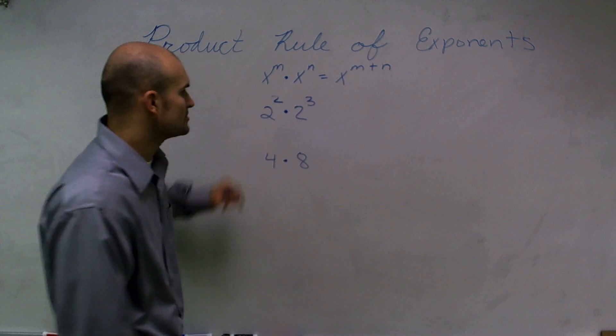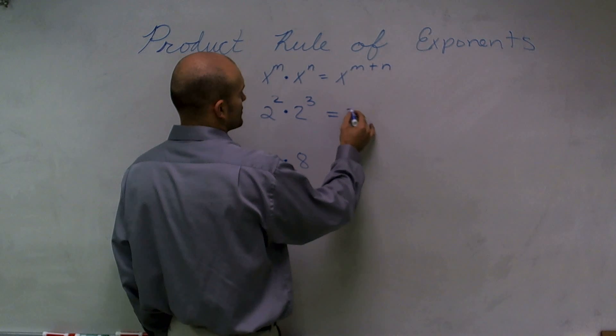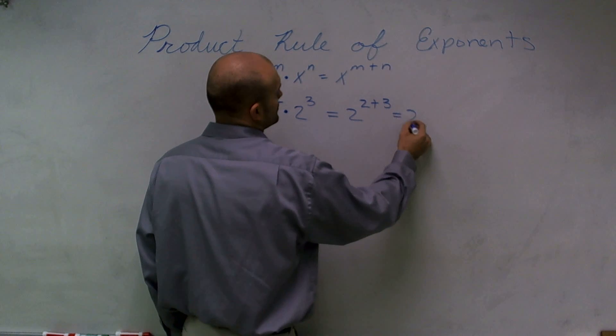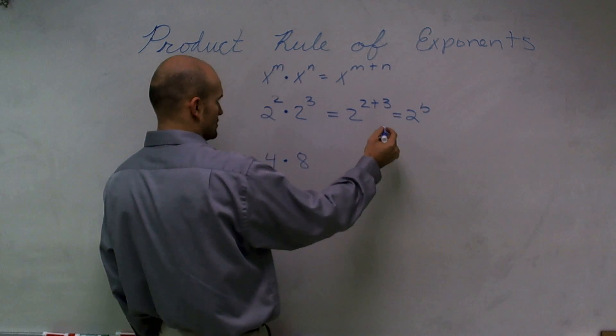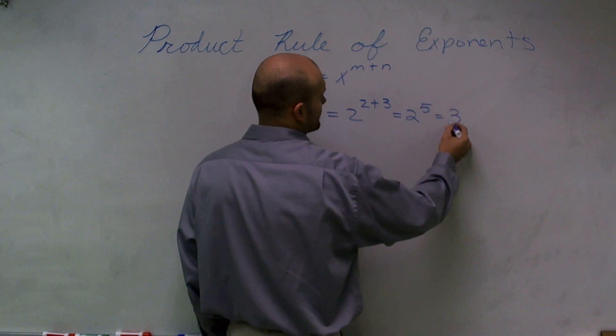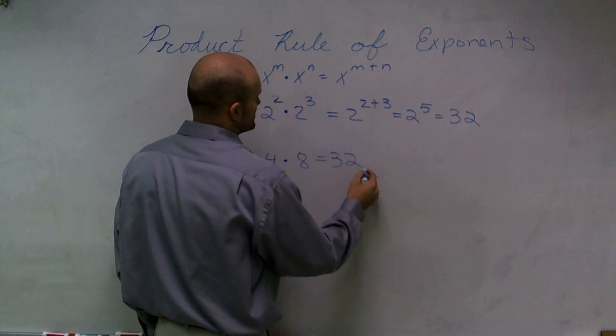So if we look at this, when I do 2 squared times 2 cubed, by using the product rule of exponents, what that represents is 2 to 2 plus 3, which equals 2 to the fifth, which equals 32. When I do 4 times 8, I also get 32.